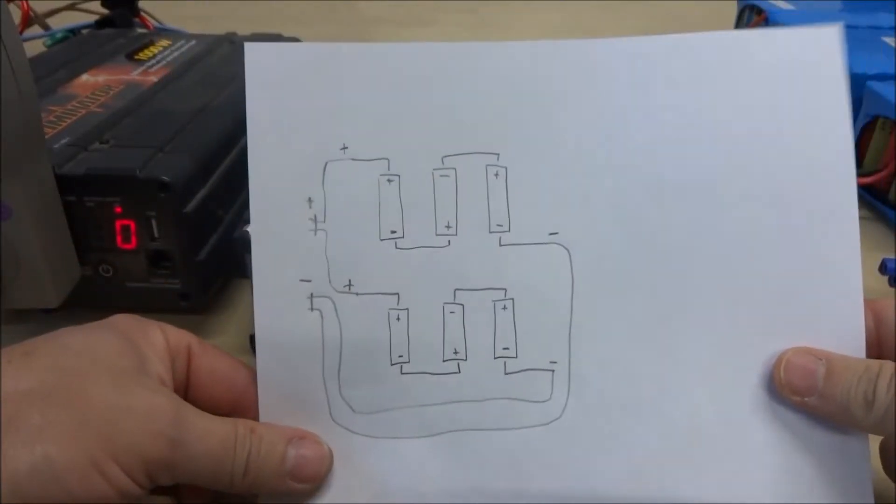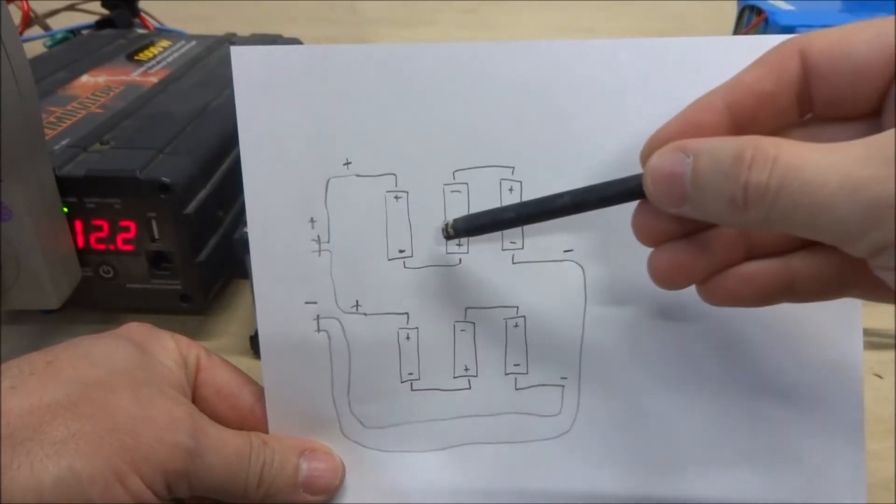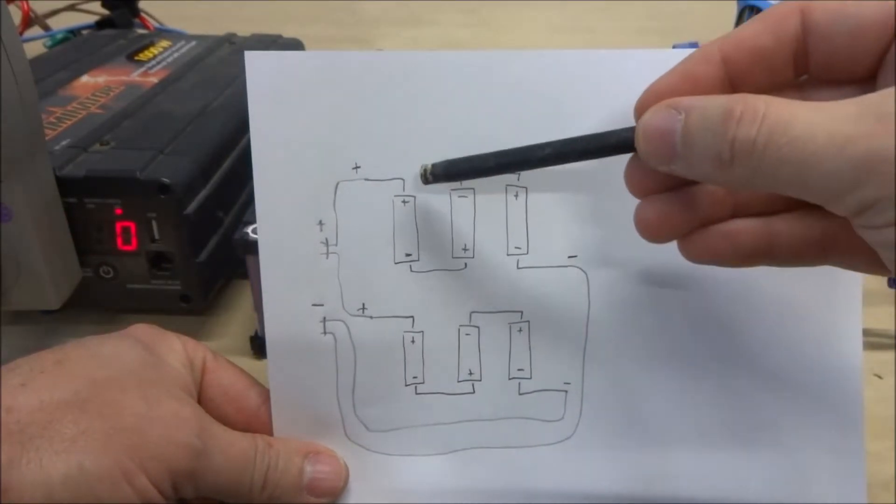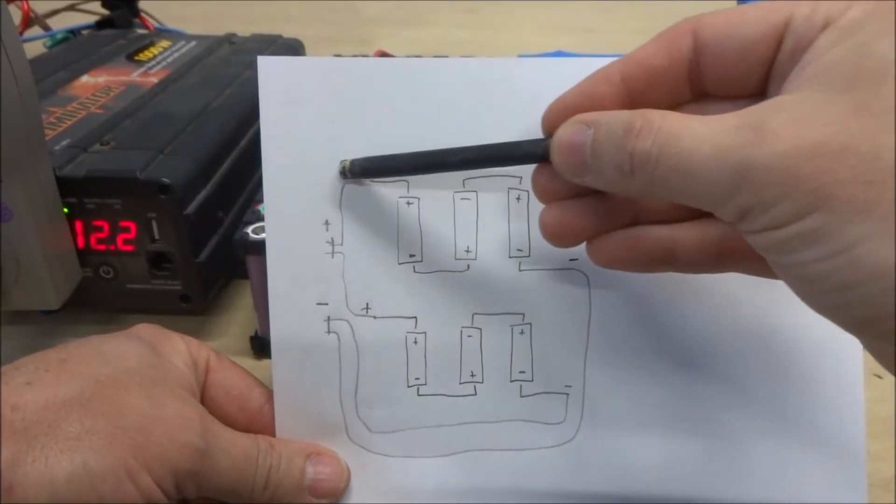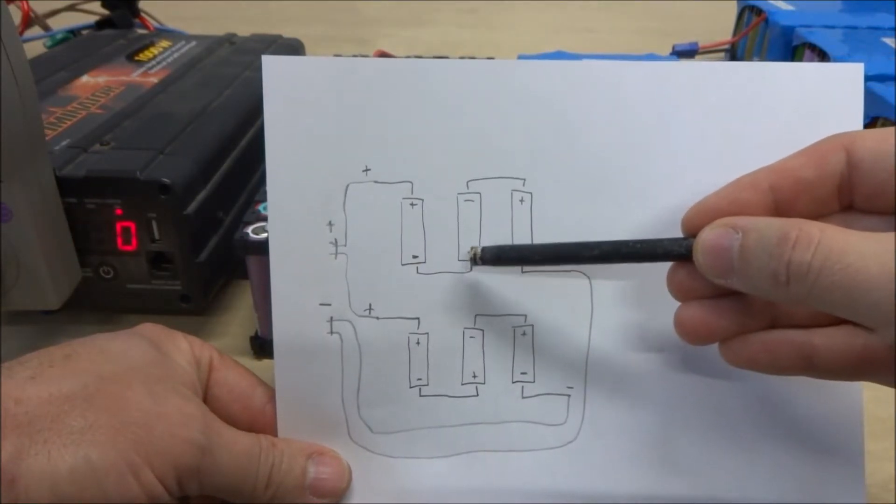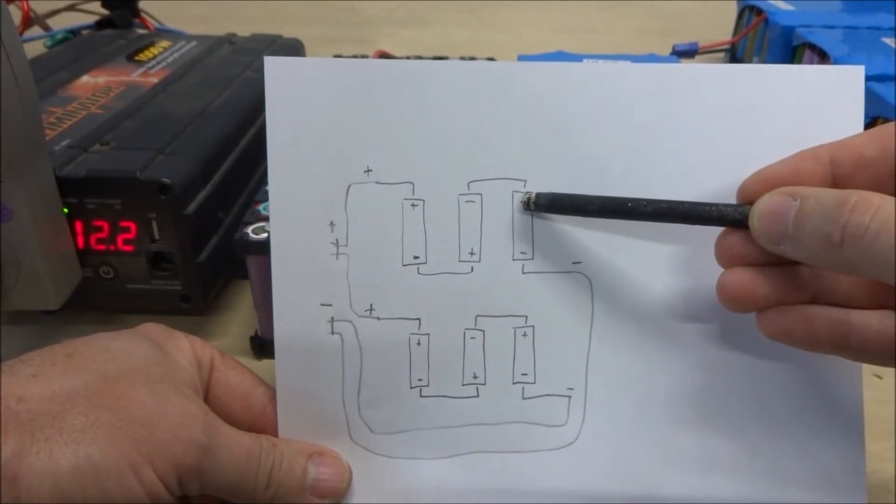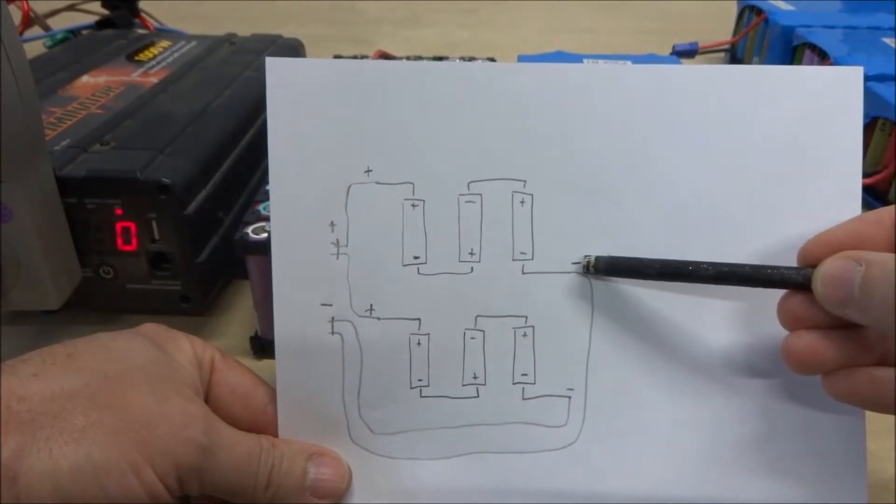So let's say this is one of my packs. I have three groups of cells in series. So I have the pack positive, then a negative connected to the positive of the next group of cells, and here the negative connected to the next positive for the next group of cells. And here would be the pack negative.